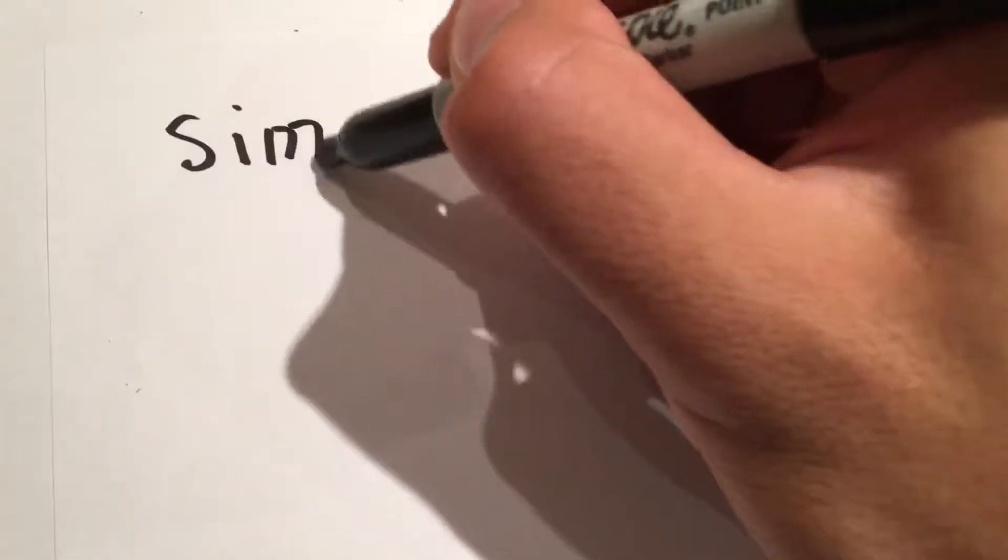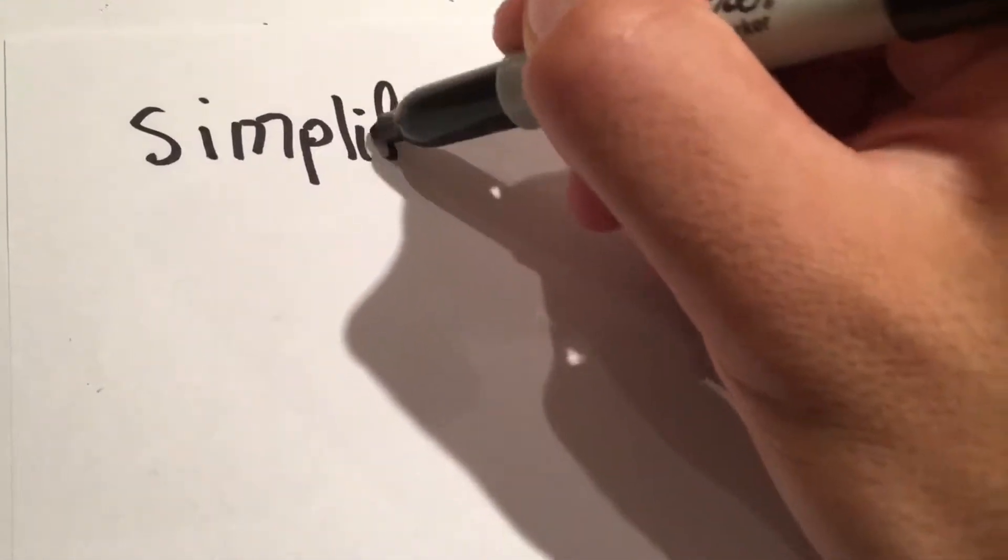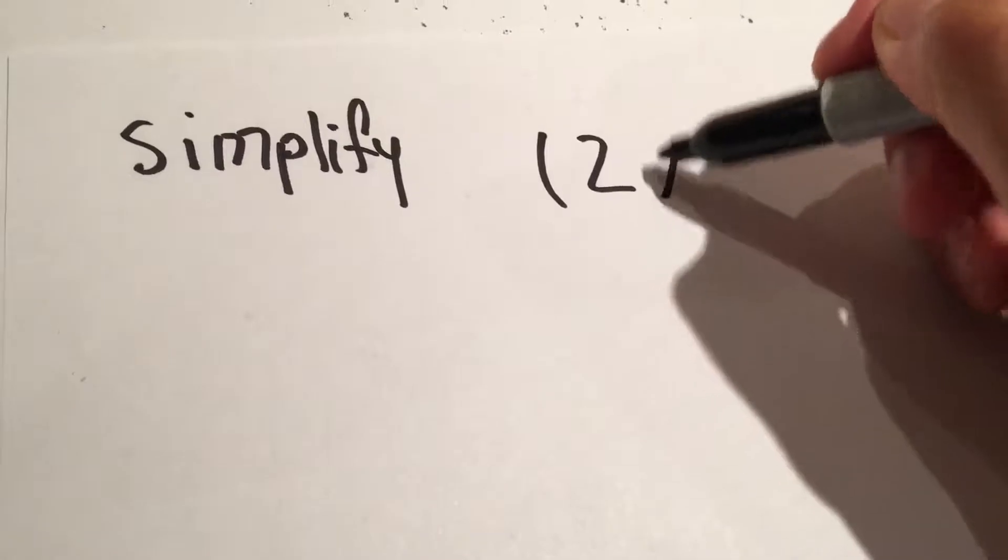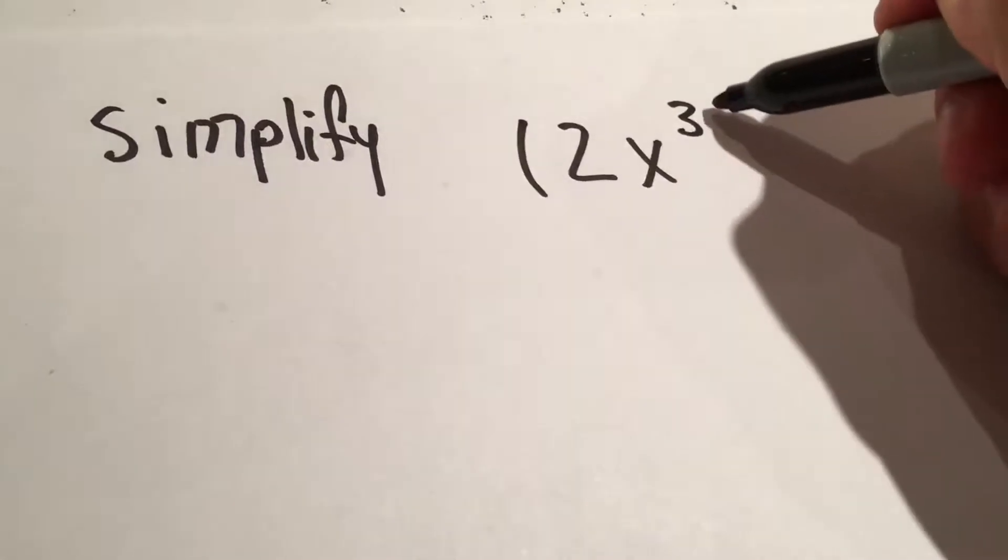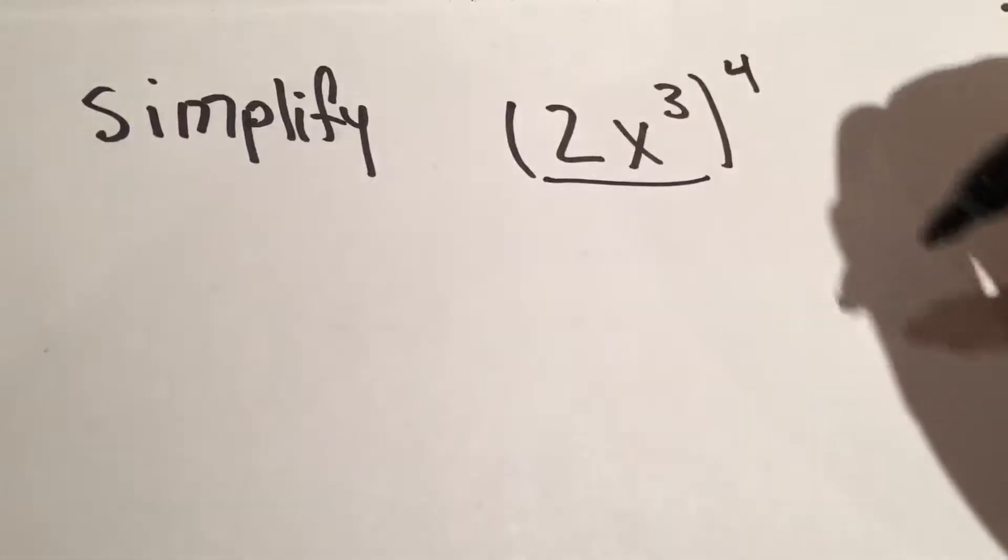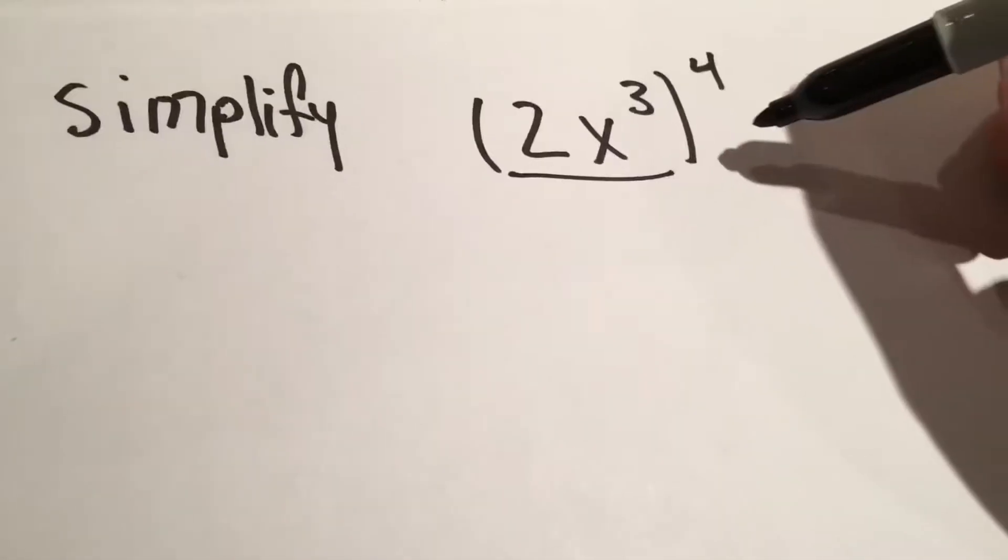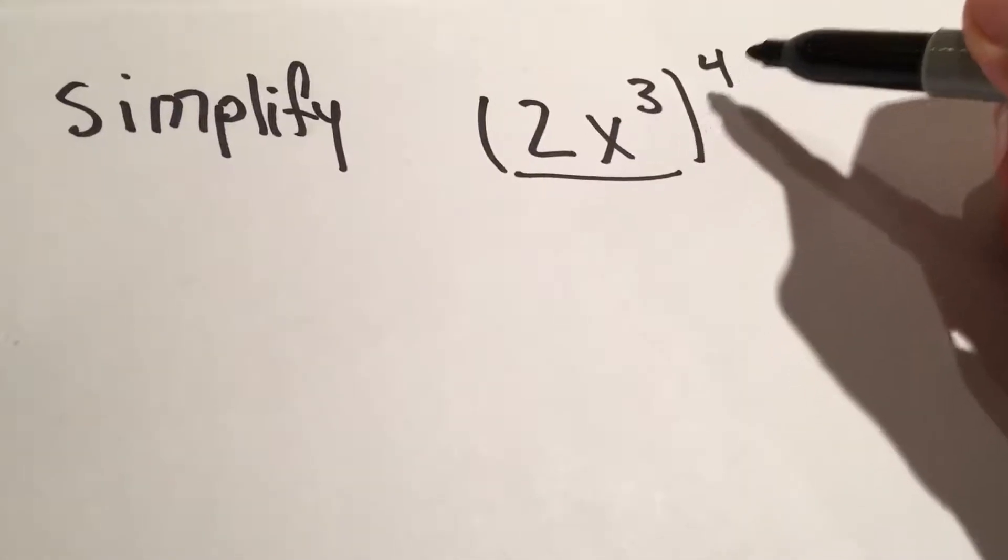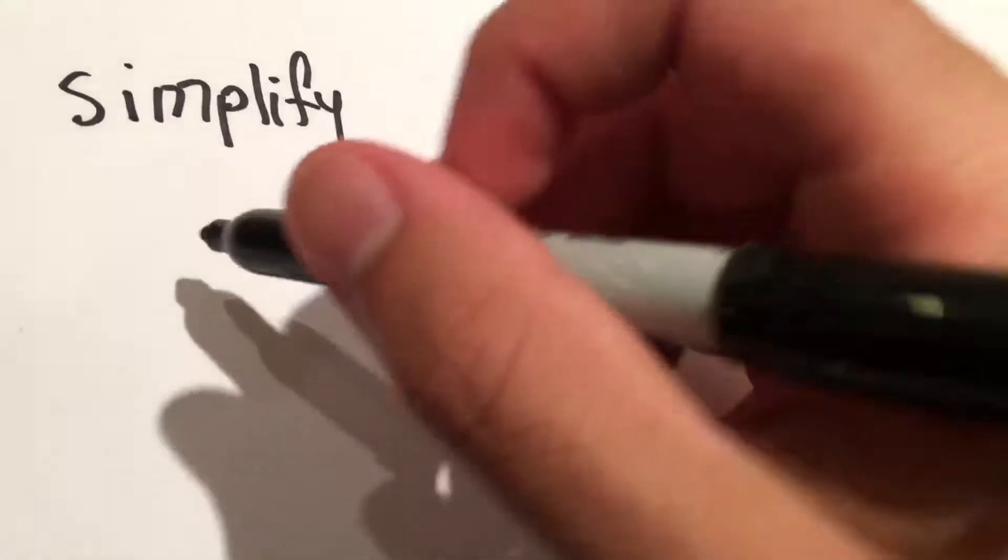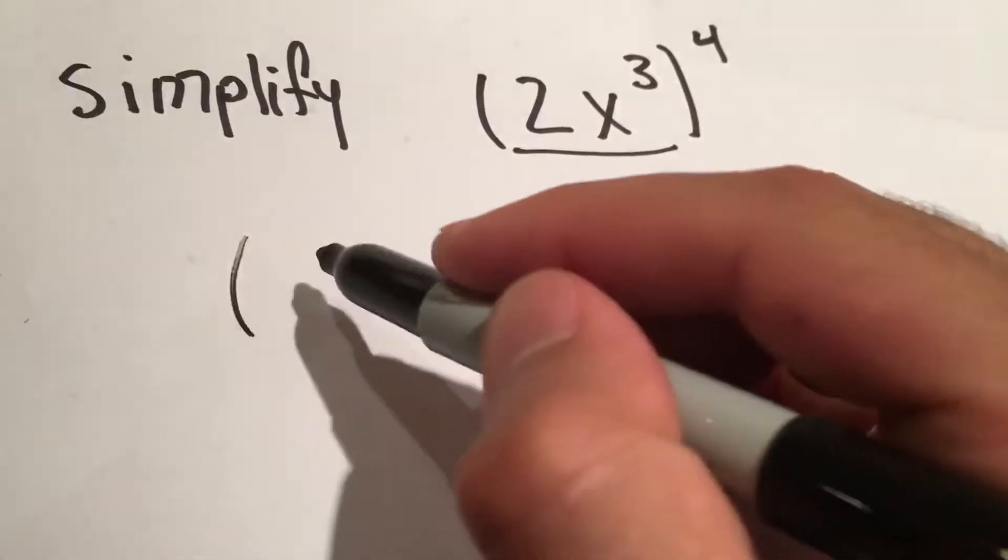Okay, you're going to simplify 2x cubed to the fourth power. Because this is just one term and there's nothing added or subtracted, we can just easily apply this exponent to the 2 and to the x cubed.